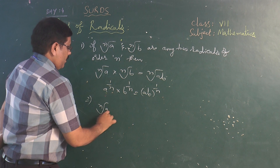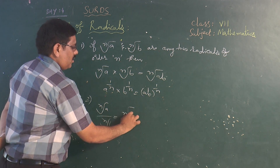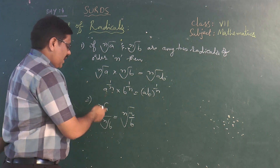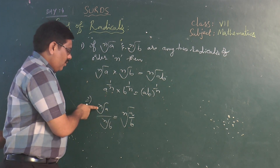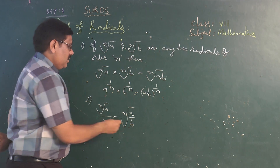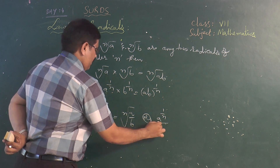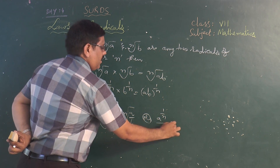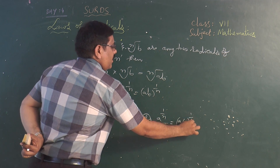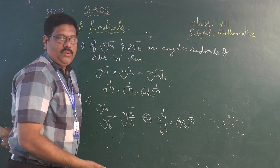The second law: n-root a divided by n-root b equals n-root of a/b. We can write it as a quotient if and only if both orders are the same. The same can be expressed as a to the power of 1/n divided by b to the power of 1/n equals (a/b) to the power of 1/n.